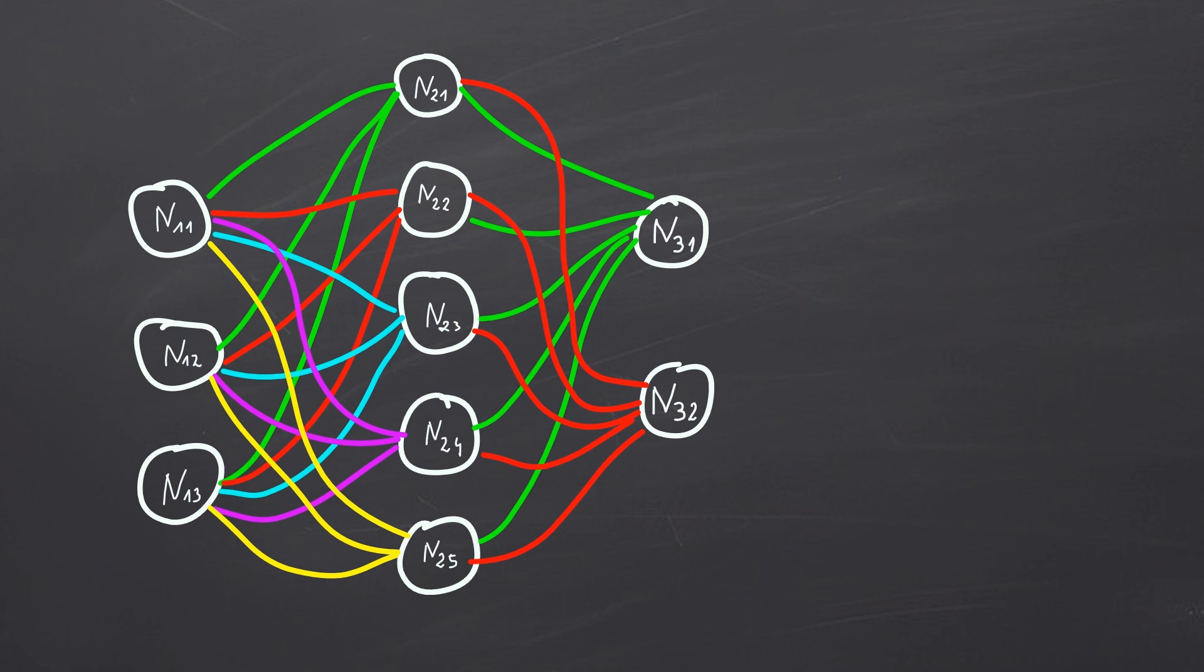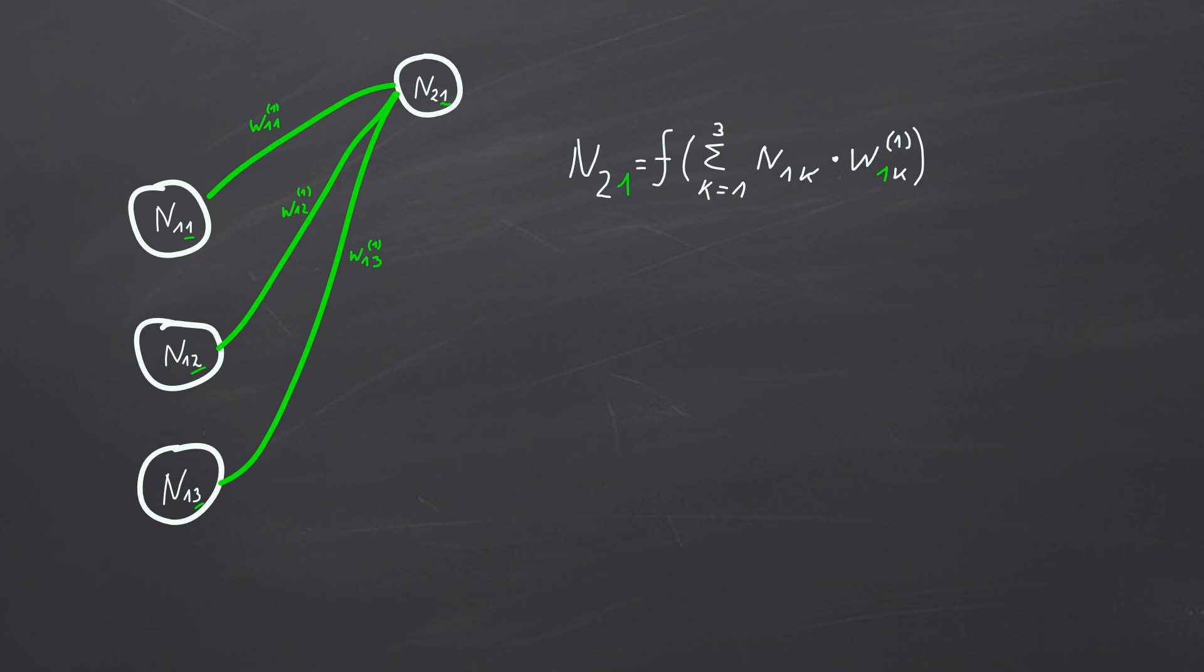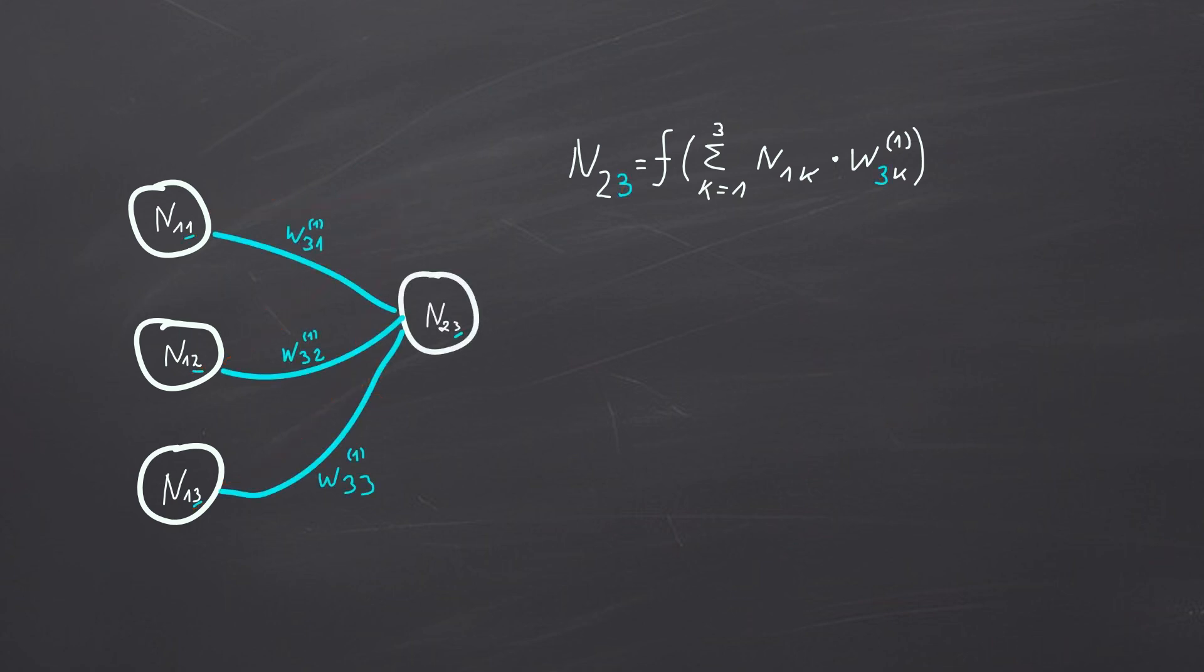For our example, we'll work with a simple network: three input nodes, one hidden layer with five neurons and one output layer. To compute the output of the network, we proceed layer by layer, starting from the input layer and moving forward to the output layer. This is necessary because each layer output serves as the input for the next layer. For each neuron, we calculate a weighted sum of inputs. We then apply the activation function to this sum to determine the neuron's final output.